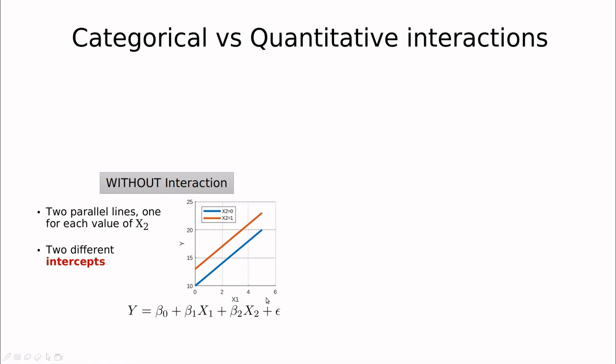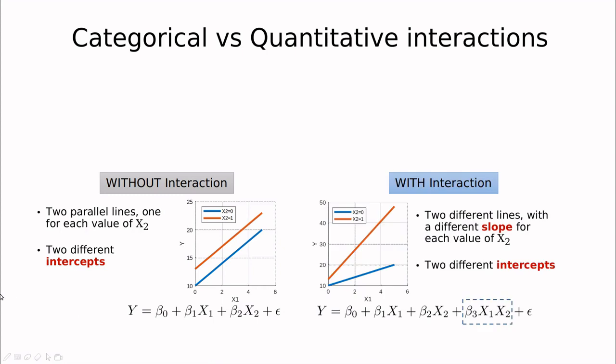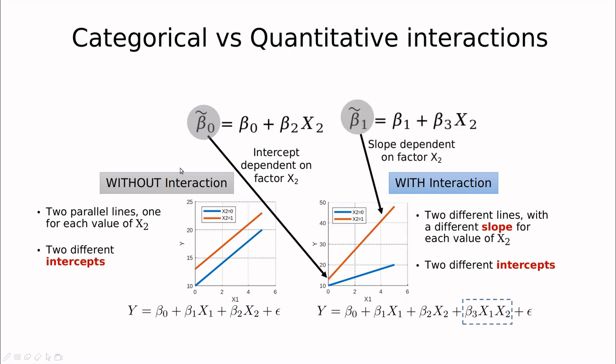But when we introduce interaction, basically what we are doing is changing slightly also the slope. You can understand this again by grouping terms in x1. Beta zero tilde can be defined in this way, so this is the same as before, but now we also have a slope depending on x2, increasing by the factor beta three.